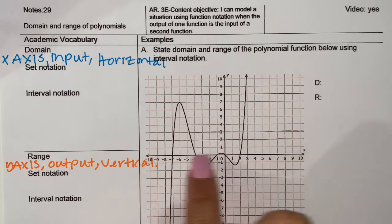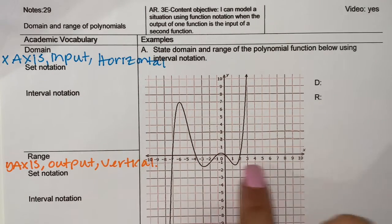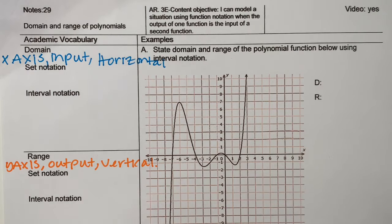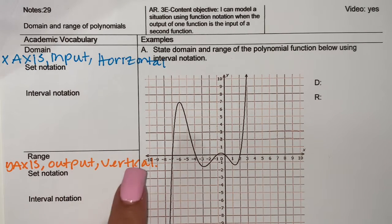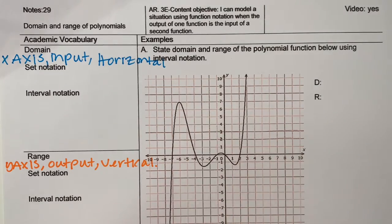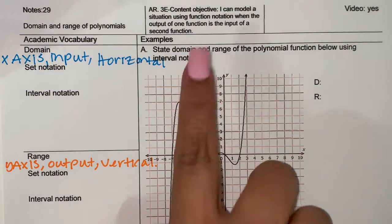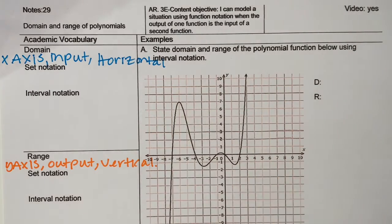You want to look at the line that is horizontal. Range is going to be the y-axis, the output, and whatever's happening vertically with a function, with the behavior.